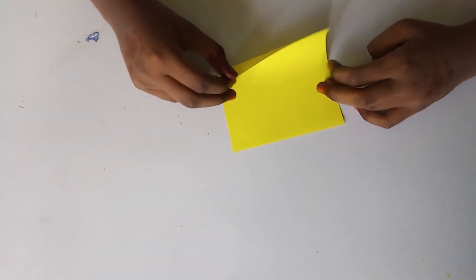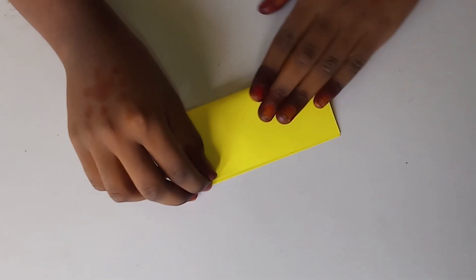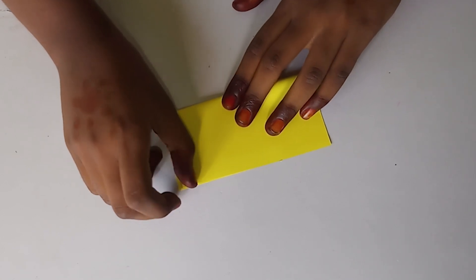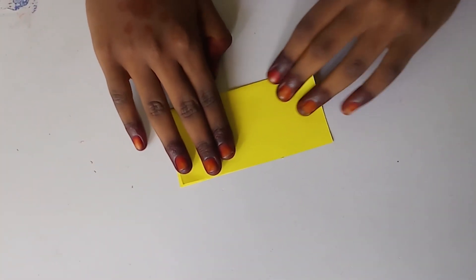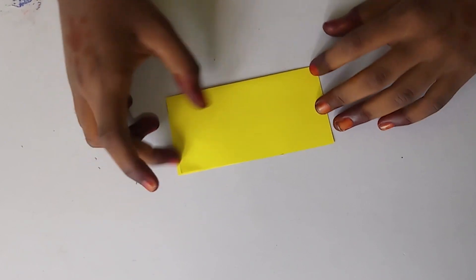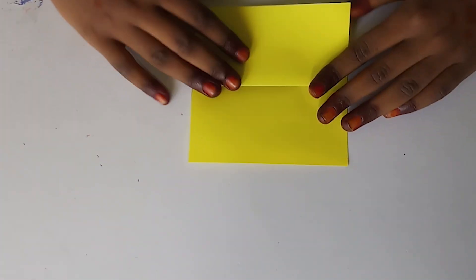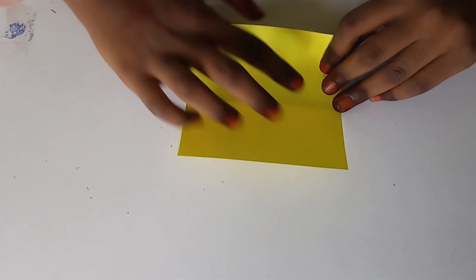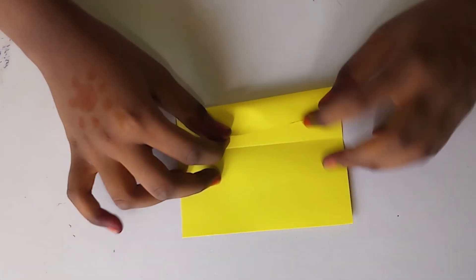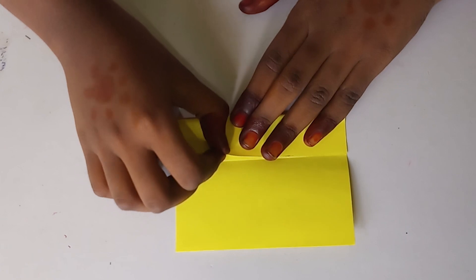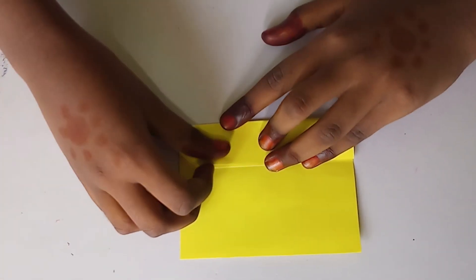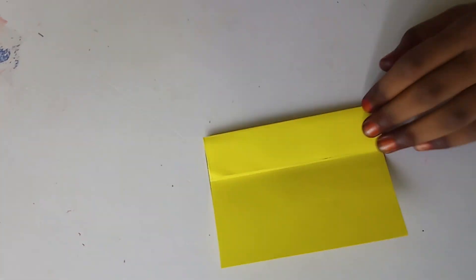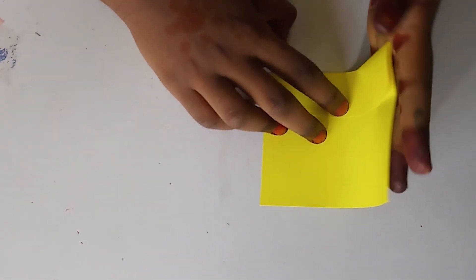First, fold the paper in half. Now, take this corner to the center line. Fold vertically.